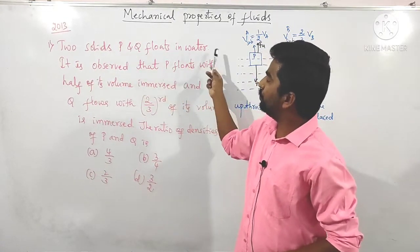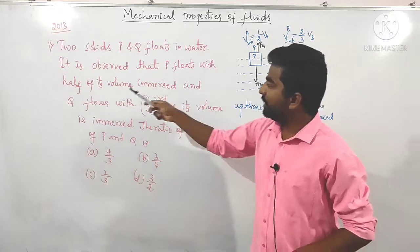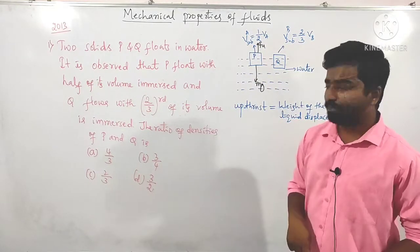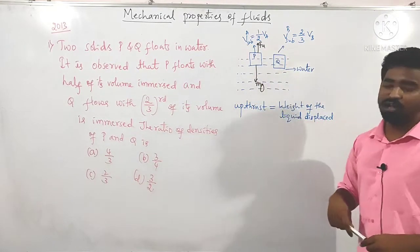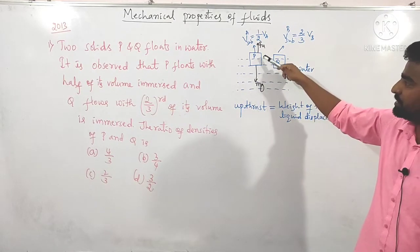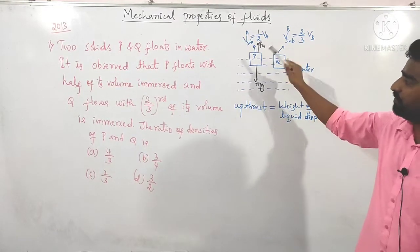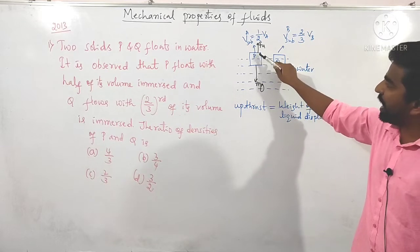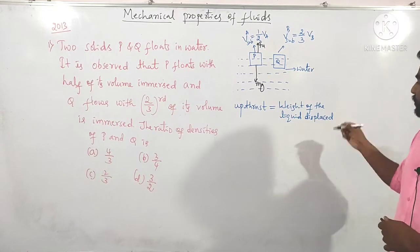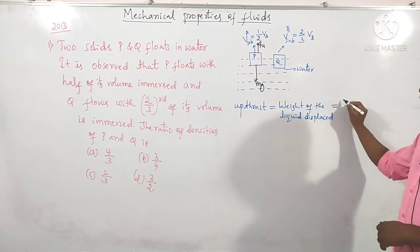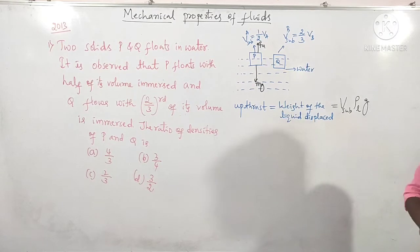The question asked in 2013: two solids P and Q float in water. P floats with half of its volume immersed and Q floats with 2/3 of its volume immersed. The ratio of their densities P to Q is asked. This is based on Archimedes' principle: the upthrust equals the weight of the liquid displaced, which equals volume of the submerged object into density of the liquid into g.